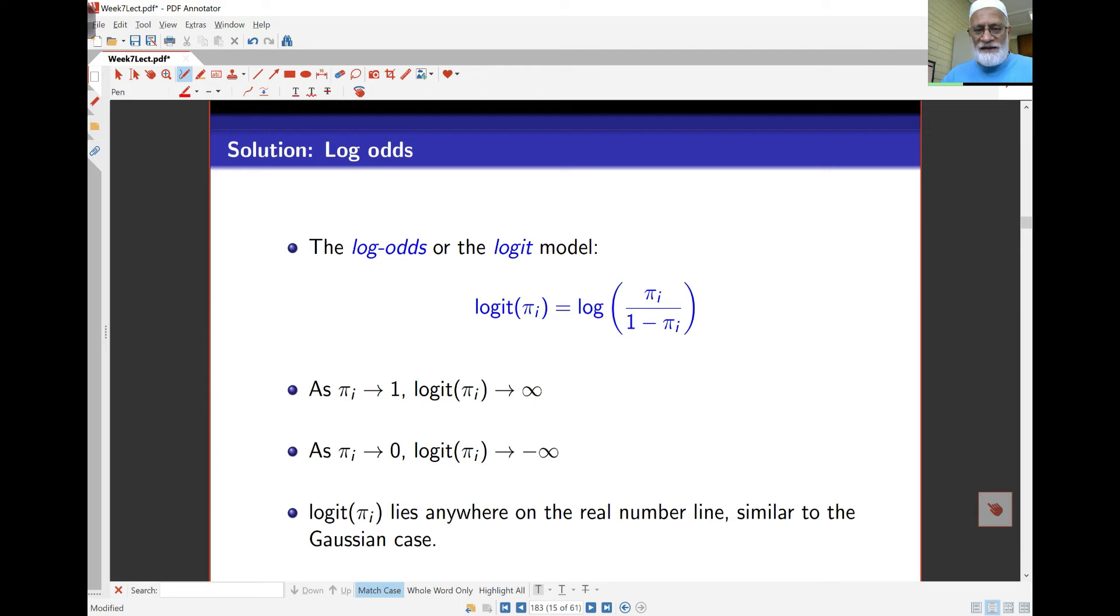As πi goes towards 0, I have 0 on the top and the bottom line is 1. As the bracket goes towards 0, the log goes towards negative infinity. So the logit actually lies between negative infinity and infinity, so I could describe that with some kind of regression model.